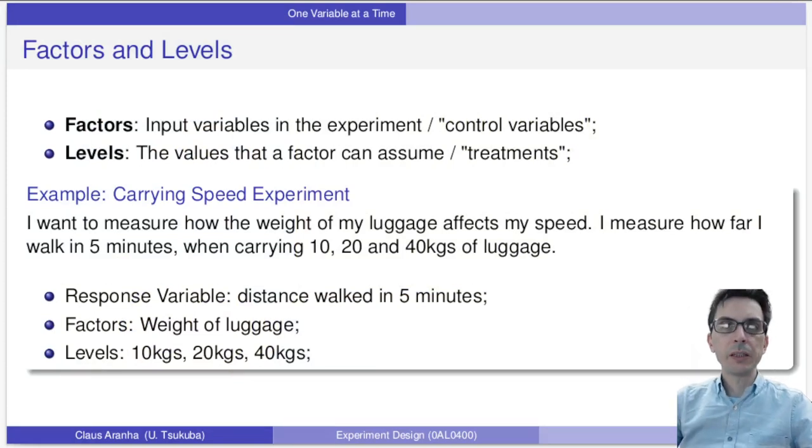Let's remember from the beginning of the course. When we are designing an experiment, one of the first things we must decide is what are the factors and what are the levels. Factors are input variables in the experiment, the control variables, the things that we are going to change. And levels are the values that a factor can assume, the treatments.